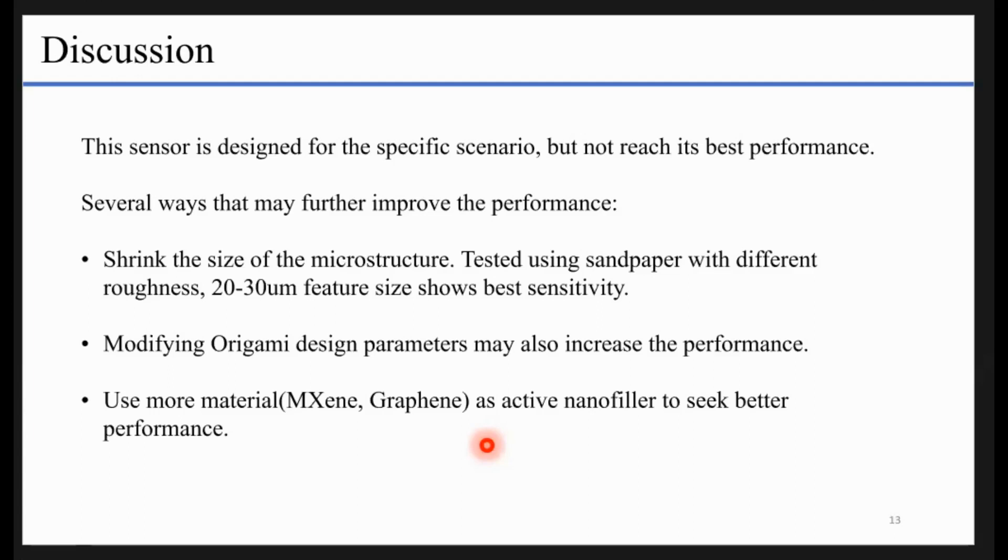Most importantly, we can use different materials. More expensive materials, like MXene or Graphene, have better nanofiller to form the conductive path, and may show better sensing performance.